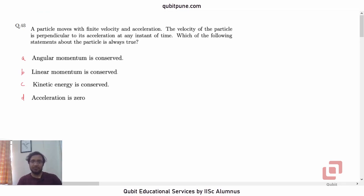This is question 48 based on mechanics and vectors. A particle moves with finite velocity and acceleration. The velocity of the particle is perpendicular to the acceleration at any instant of time. Which of the following statements about the particle is always true?